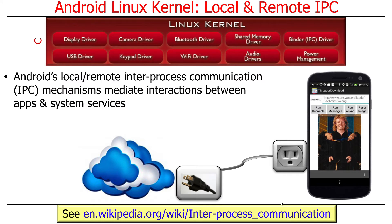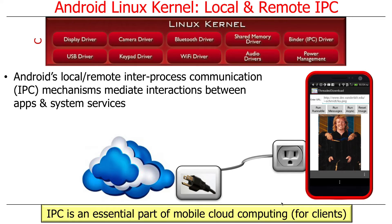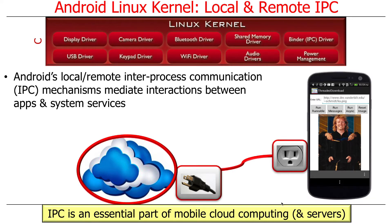Let's talk about IPC first. Android has a bunch of interprocess communication, or IPC mechanisms, and they're used to do various things. They mediate interaction between apps and system services. They're used to communicate between an app on the phone and some piece of the app running in a cloud service somewhere. They're important for clients, because that's how the client is going to talk to the outside world. And of course, they're also important for servers.